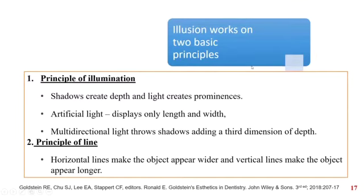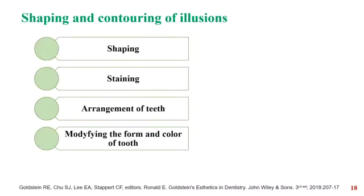Coming to illusions. Illusion works on two basic principles: the principle of illumination and the principle of line. The principle of illumination states that shadow creates depth, whereas light creates prominence, and multidirectional light adds a third dimension of depth. The horizontal line gives an illusion of a wider tooth, whereas a vertical line gives an illusion of a longer tooth. The shaping and contouring of illusion involves four important factors: shaping of the teeth, staining, arrangement of the teeth, and modifying the form and color of the tooth.